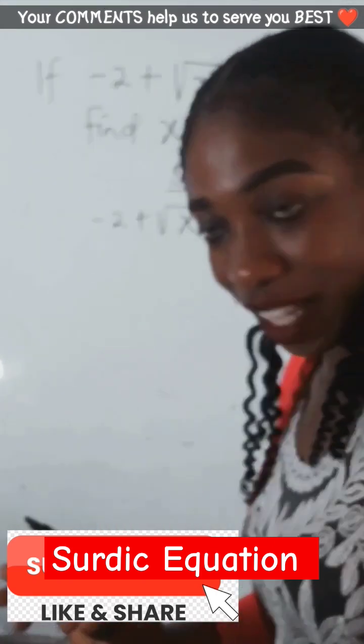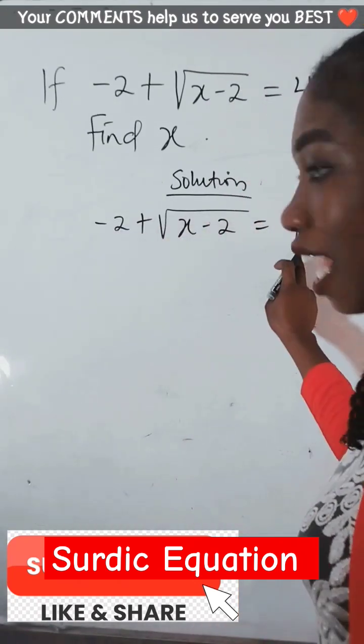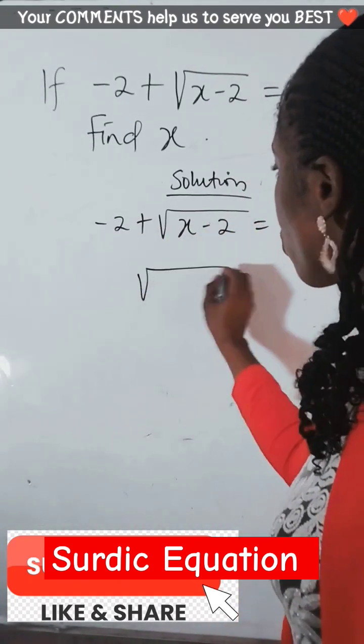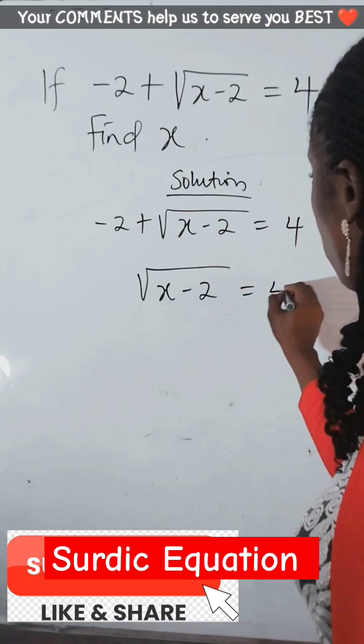So what we do is we collect like terms. This and this are like terms. So we're going to have √(x - 2) = 4.